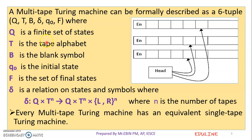We will define the transition function delta. Delta maps Q cross T raised to N to Q cross T raised to N, times {L, R} raised to N. Here, N is the number of tapes.